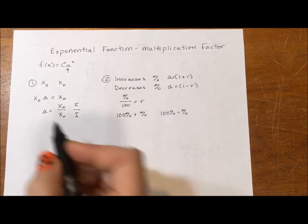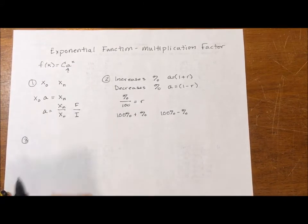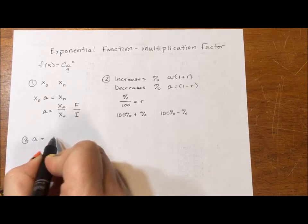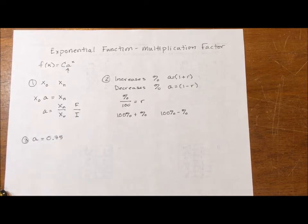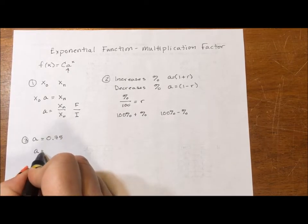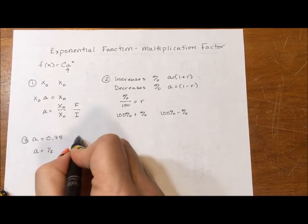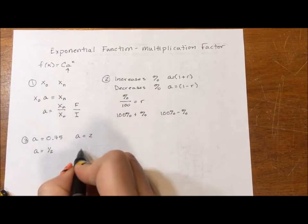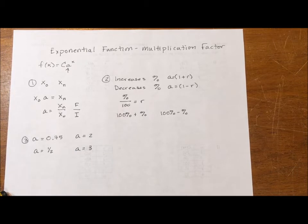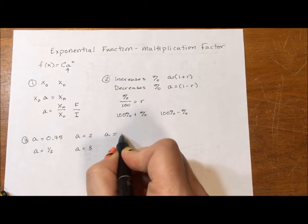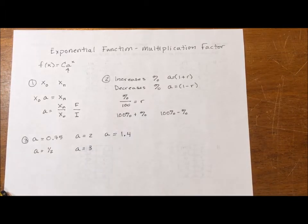The third way that you will be given A is you'll be given A. You'll be told A increases by 0.75 every 10 days. A has a half-life of 30 years. A doubles every 15 minutes. A triples every hour. You're just given A. A increases by a factor of 1.4 every month. In these cases, you're just given A. Be excited. It's kind of like when you're doing an equation of a line and they just give you the slope. You don't have to do any work. It's just given to you.